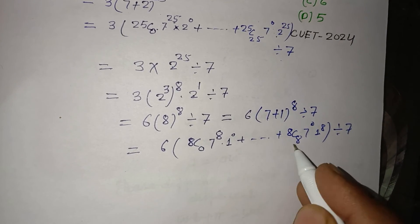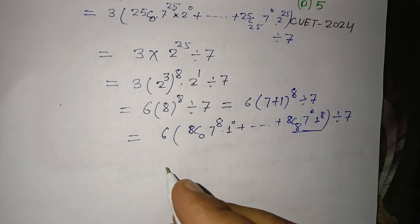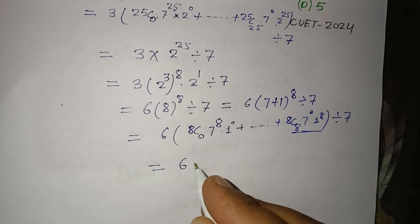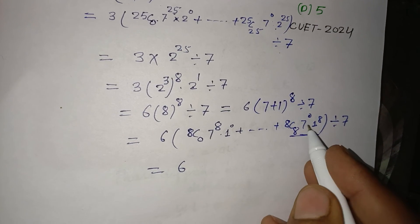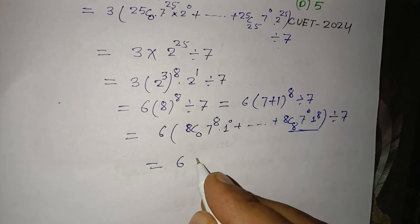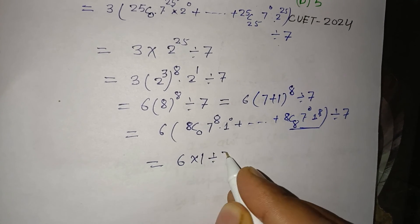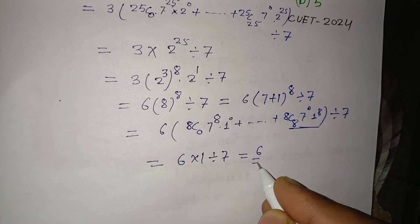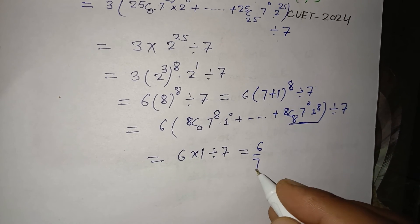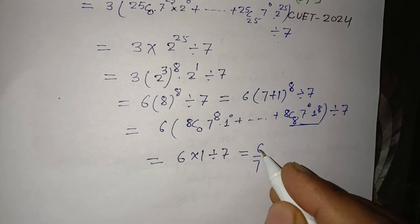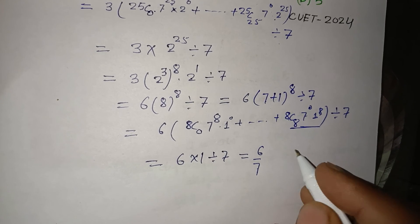All terms are divisible by 7 except the last term. So we have 6 times 1 divided by 7, which equals 6 divided by 7. When we divide 6 by 7, the remainder is 6 because 7 is greater than 6.